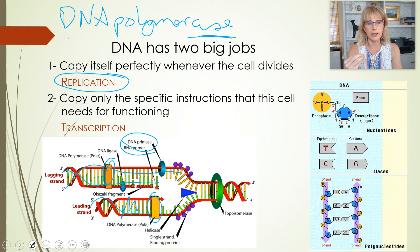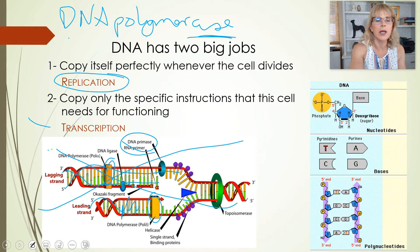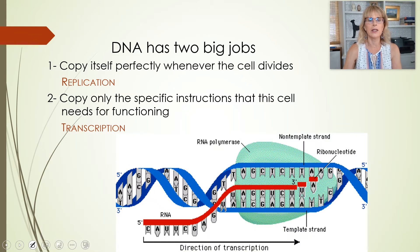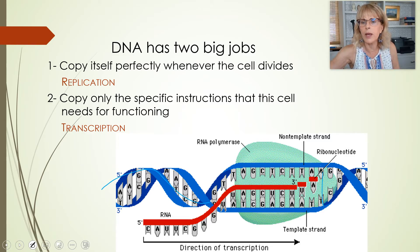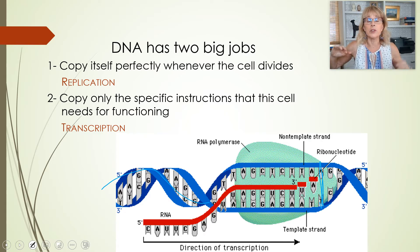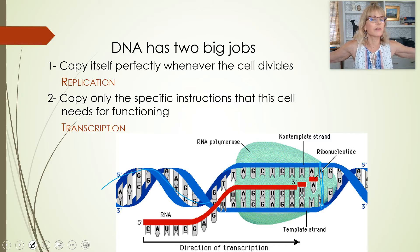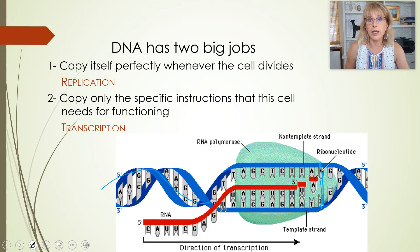The other job DNA needs to do — its second job — is called transcription. Transcription is not copying all of the DNA. DNA is millions of base pairs big, and when replication happens, it's the entire DNA inside the entire cell that needs to get copied. That's a huge job. Thank goodness it only happens once in the life of a cell. That's replication.